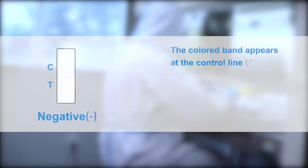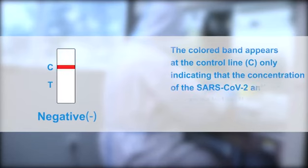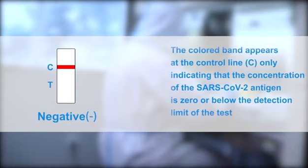Negative results: The colored band appears at the control line C only, indicating that the concentration of the SARS-CoV-2 antigen is zero or below the detection limit of the test.